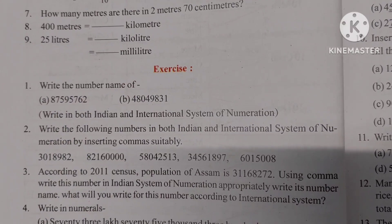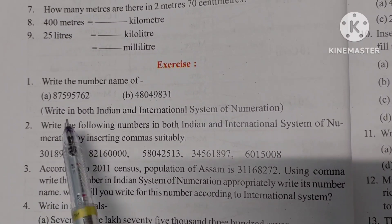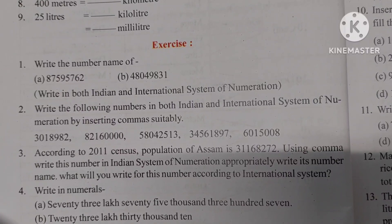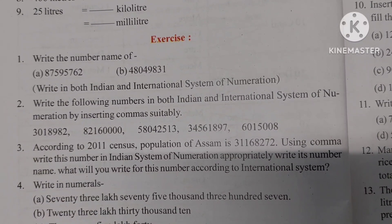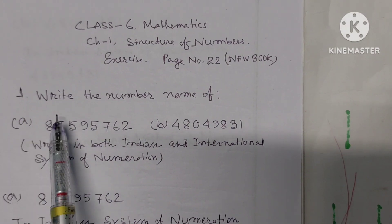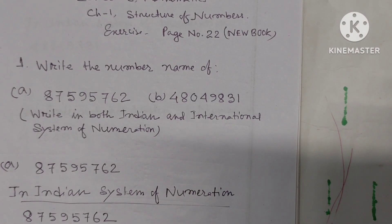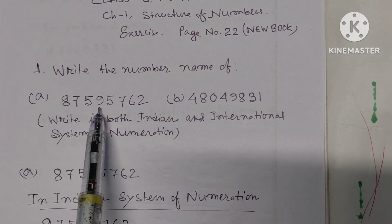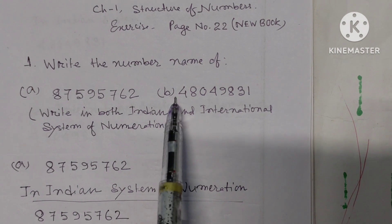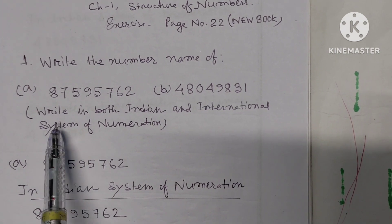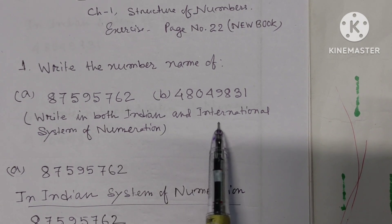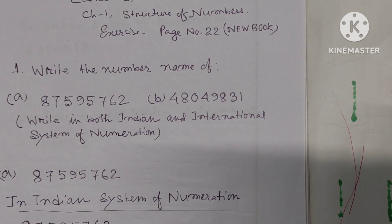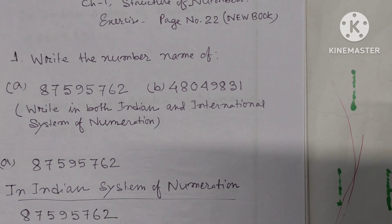Exercise Number 1: Write the number name of the given numbers. We have to write in words, in both Indian and international system of numeration. Let us begin.